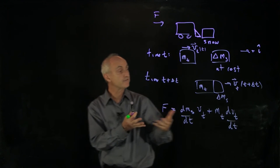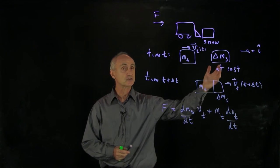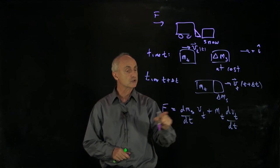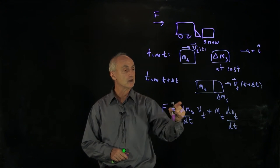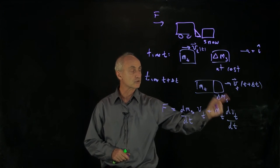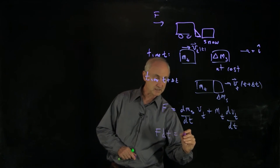So when we found our equation for describing the rate that the truck changes its speed, the snowplow, when it's pushing snow away, we wrote down our equation in terms of the external force on the truck, the rate that snow is being picked up by the truck, the velocity of the truck, mass of the truck, the rate of change of velocity of the truck. If we multiply our equation through by dt,